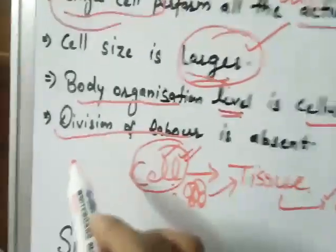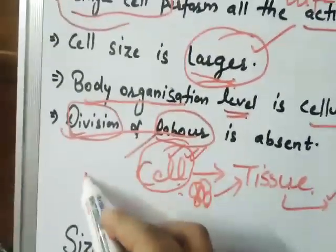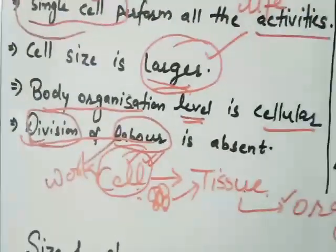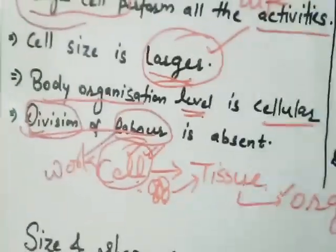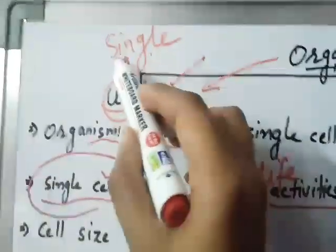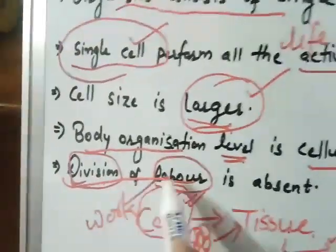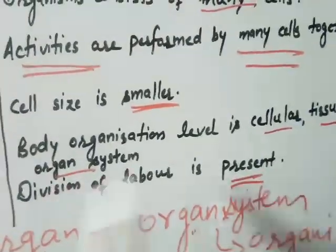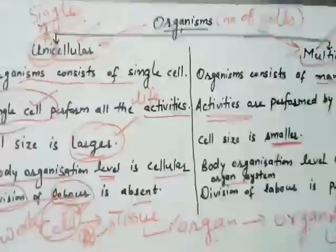After that comes the term division of labor. Division means sharing, labor means work — so division of labor means sharing of work. Just like one person alone cannot divide work among themselves, a unicellular organism has only one cell, so division of labor is absent. Whereas in multicellular organisms, division of labor is present.